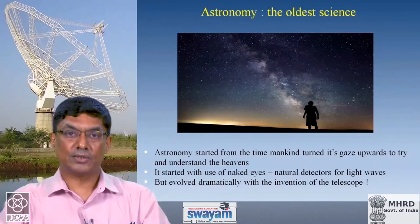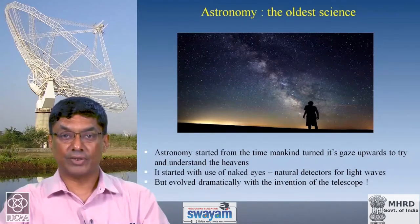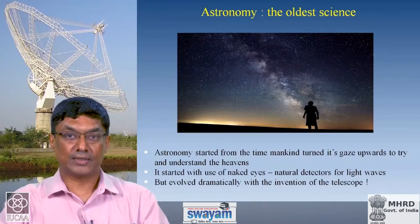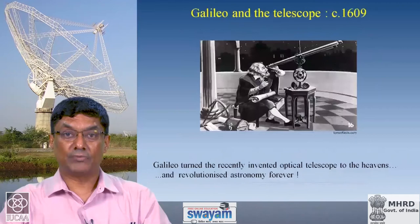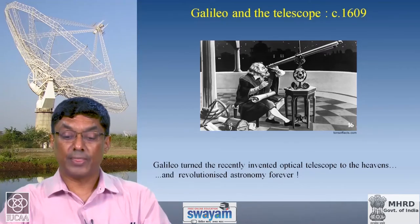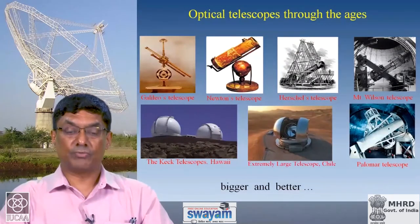As we all know, astronomy is the oldest science. It started from the time when mankind turned its gaze up to the heavens. It started obviously with the naked eye, because that is the natural detector for light waves — and it is important that you have the right kind of detector for different electromagnetic waves. When the telescope was invented there was a dramatic change, and Galileo turned the telescope to the heavens for the first time in the early 1600s, completely changing how we see and understand the universe.